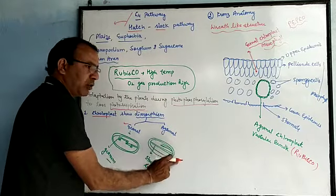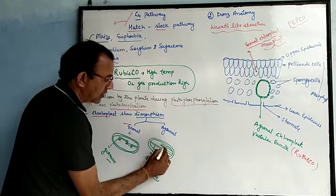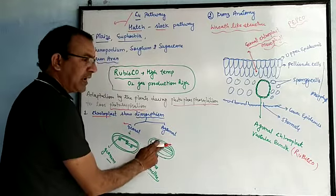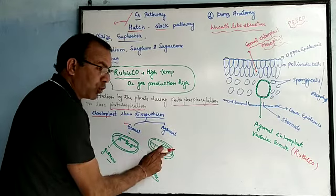In this type of chloroplast, there is no grana present, only the stromal lamellae which are attached to the inner membrane. This type of chloroplast is known as agranular chloroplasts.